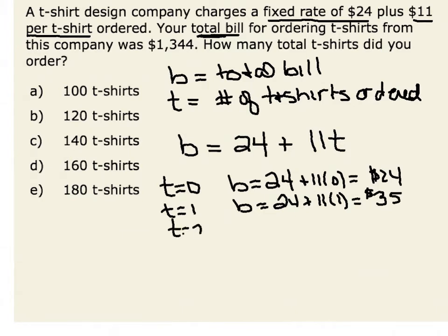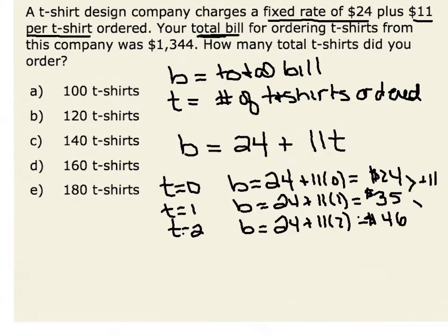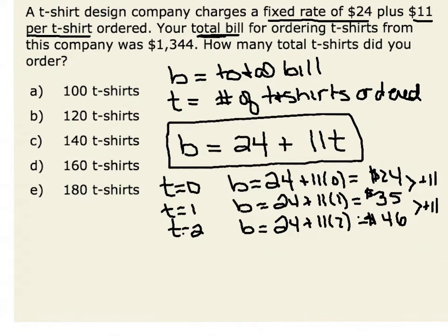If we ordered two t-shirts, our bill would be $24 plus 11 times 2, or $24 plus $22, giving us $46. We can see that for every t-shirt we order, our bill will go up by $11. We would also notice that this equation is a linear equation. Now we are ready to solve our task.